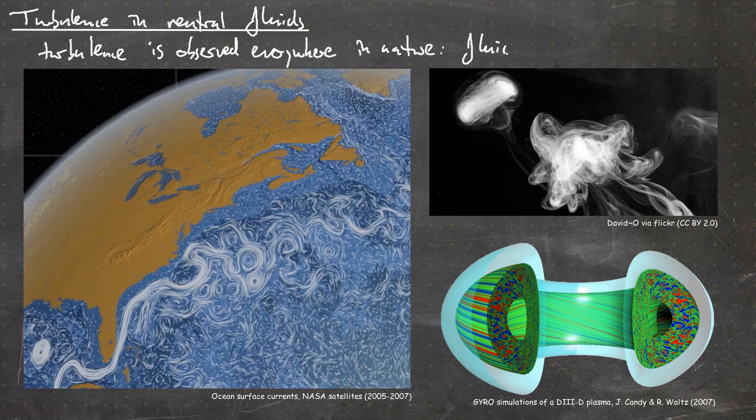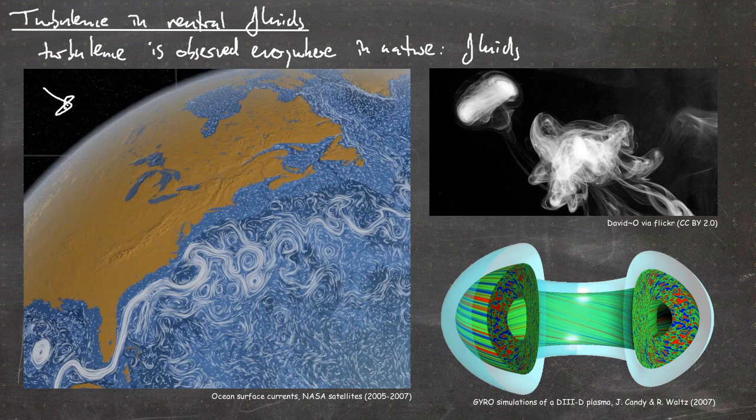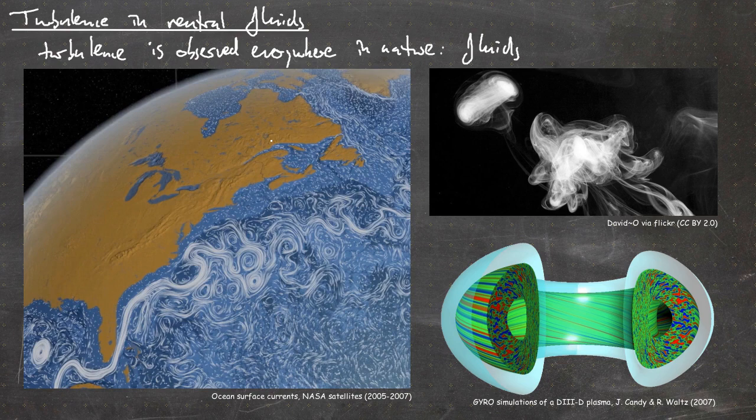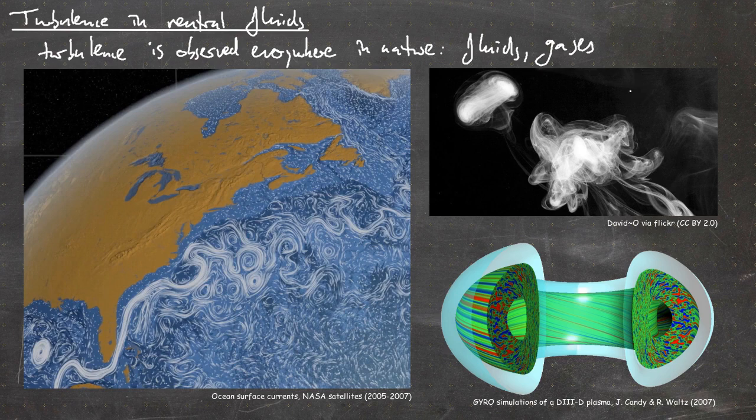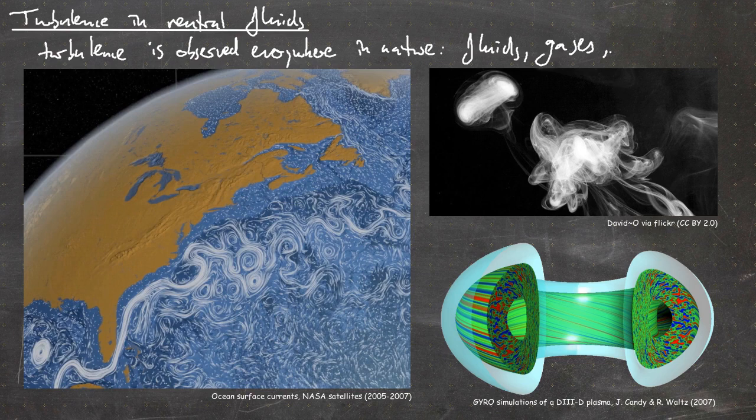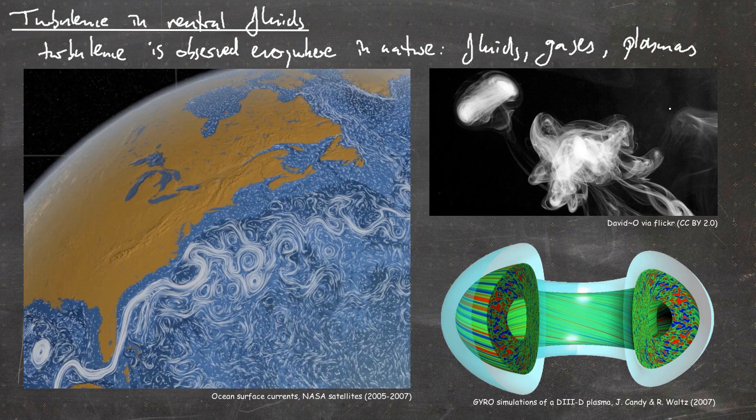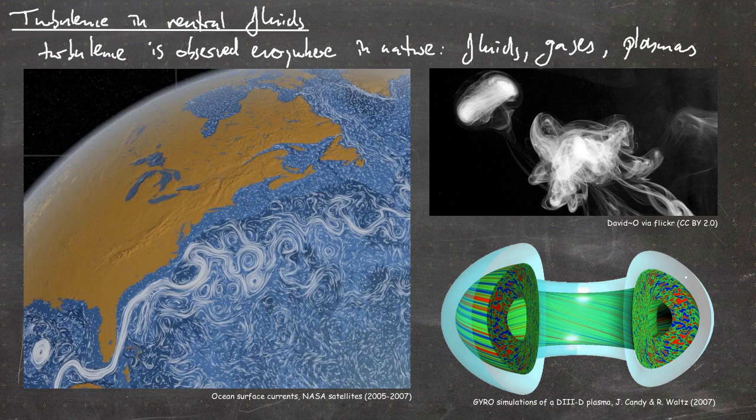When I say everywhere, I mean, for example, in fluids. This picture shows the ocean surface currents deduced from satellite measurements from NASA, fed into a computational model showing these turbulent structures. Then of course in gases, this photography shows smoke coming from a candle with a very nice turbulent structure. And on the bottom, you can see a simulation of a magnetized plasma, actually of a D3D plasma, showing the turbulence in the poloidal cross-section.